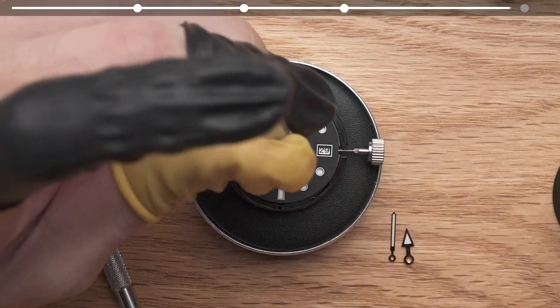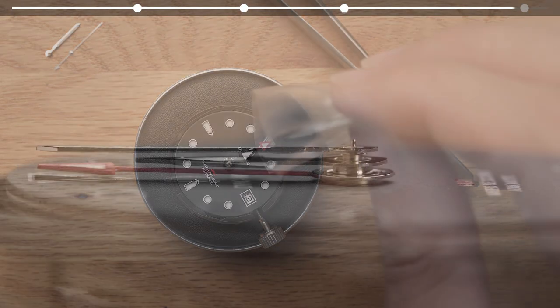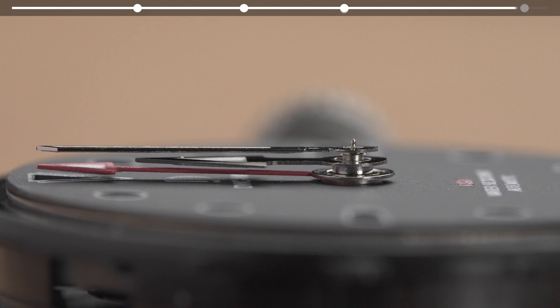We always check the height and the level of the installation after setting each watch hand. This is how it should look after you set the hour and minute hands to the correct level and height.